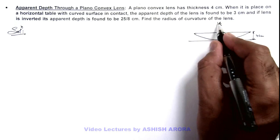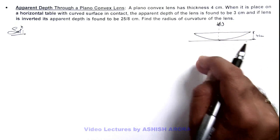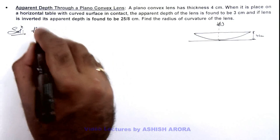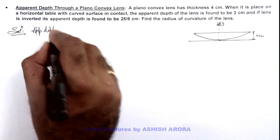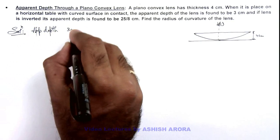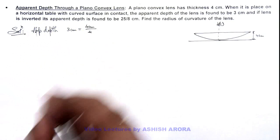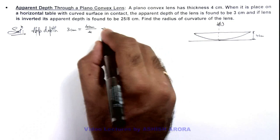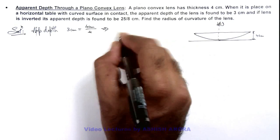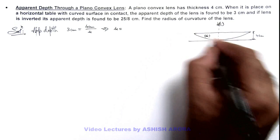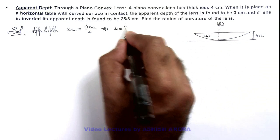For an observer looking onto the lens from the top, the apparent depth is found to be 3 centimeters, which can be written as 4 centimeters divided by the refractive index. This gives us the refractive index of the glass used in making this lens, which is 4/3.